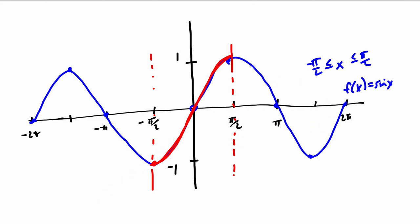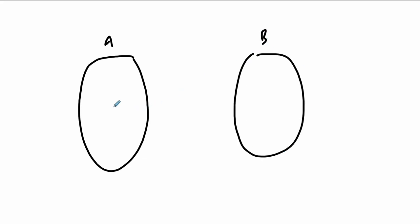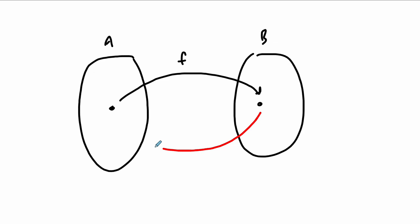Let's think about the inverse function. The sine function itself takes inputs — angle values — and maps them to ratios. That's what the sine function does. The inverse function takes those ratios and maps them back to given angles. So you're given some ratio, you apply the inverse function on it, and it's going to tell you the angle that has that ratio.